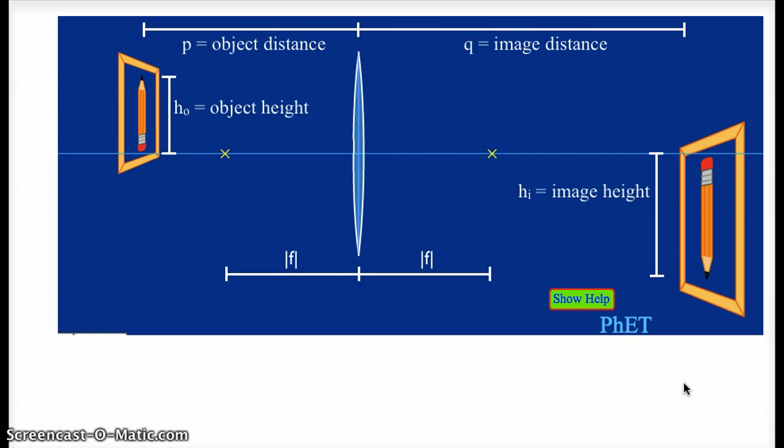That was by drawing a ray diagram using the three principal rays. That's a very good way to get an estimate of approximately where the image will be, approximately how big it will be, but unless you have some patience and a ruler, you can't get exact values from the ray diagram.